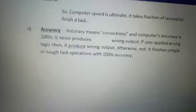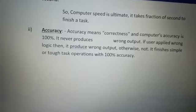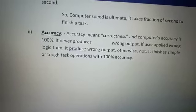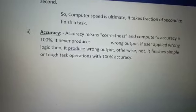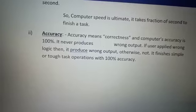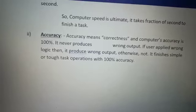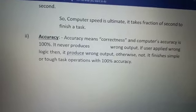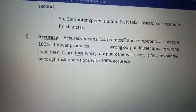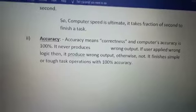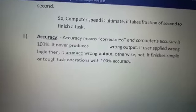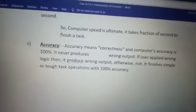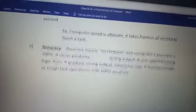Next one is accuracy. Computer performs with 100% accuracy. Accuracy means correctness — it never gives the wrong output. It always follows the logic or instruction and performs the operation with 100% accuracy.